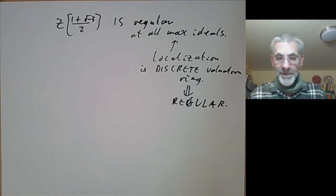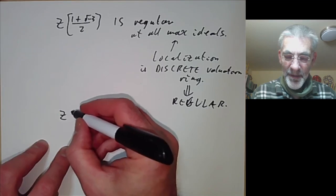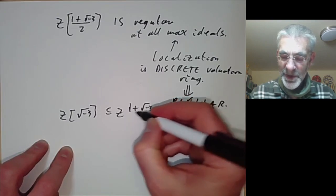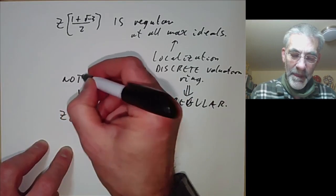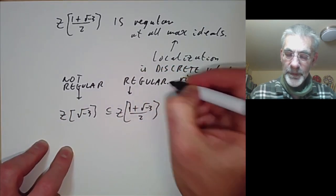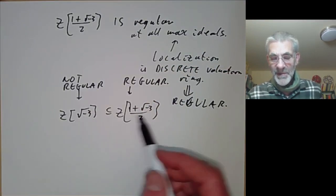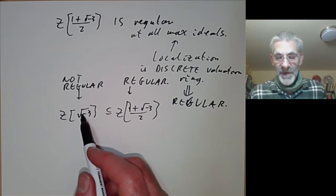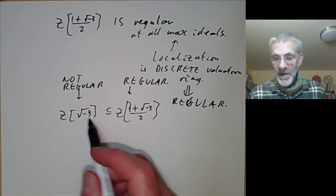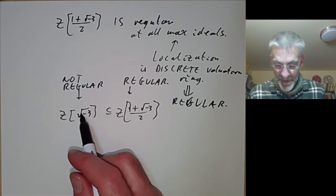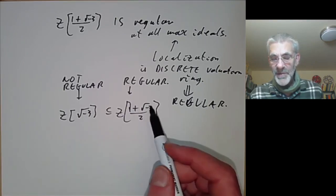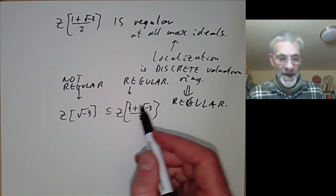So we have two rings: ℤ[√−3] contained in ℤ[(1 + √−3)/2], where the first is not regular and the second is regular. In algebraic number theory you need to do a very similar thing — for any order of an algebraic number field you really want the ring to be regular, and to do that you take its normalization, i.e., the integral closure of the ring in its quotient field. Geometrically this corresponds to making all the points of its spectrum regular, or informally making them non-singular.